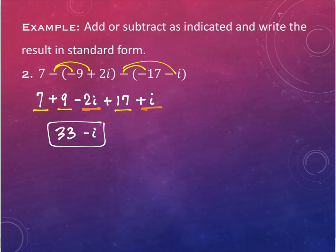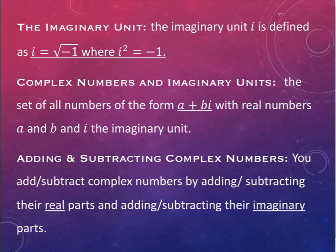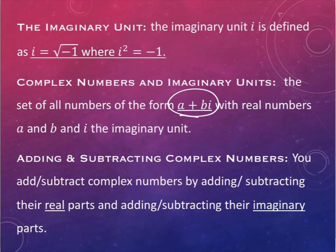The directions will typically tell you to write them in standard form. Standard form is that a plus bi form. So anytime it refers to standard form, that's what it's referring to — you have the real number at the beginning part and the imaginary part at the end. Writing it in the opposite direction is not wrong, it's just not what we would call standard form.